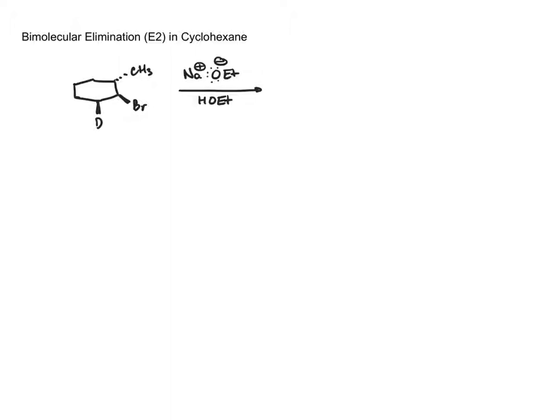The first thing I want to do is identify the carbon bearing the leaving group and call that the alpha carbon. The carbons directly bonded to that we're going to call the beta carbons, and because they're different I'm going to call them beta and beta prime.